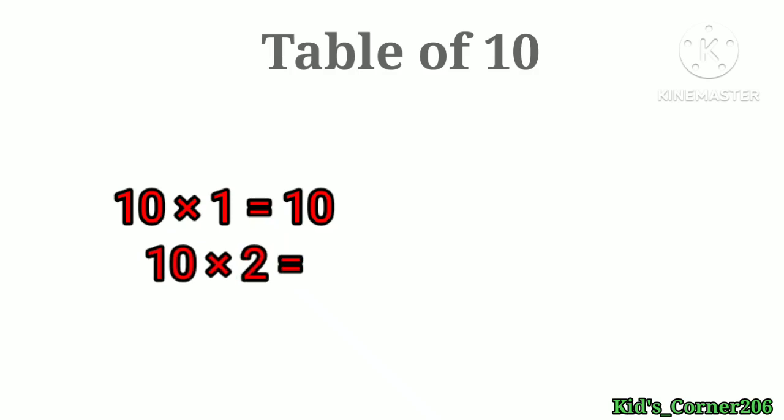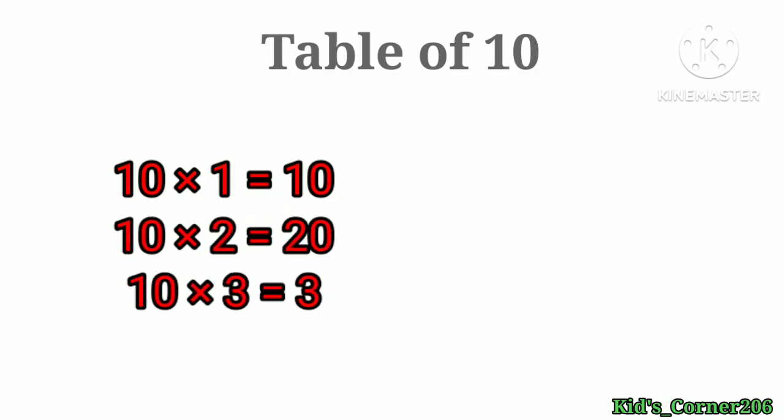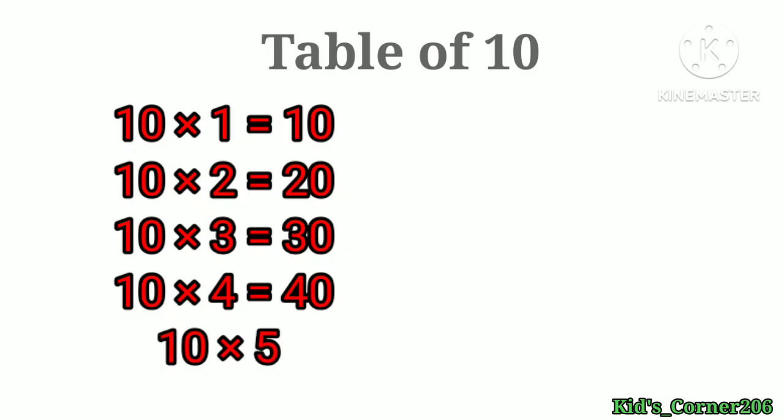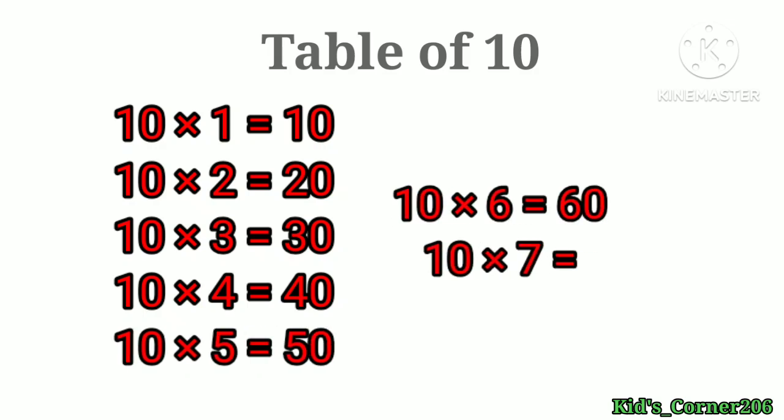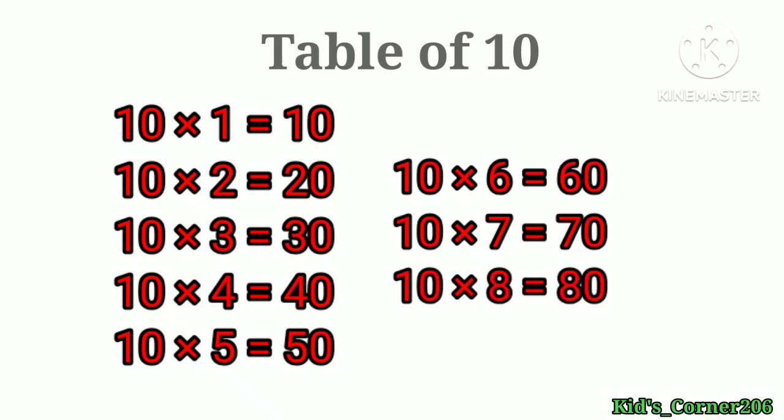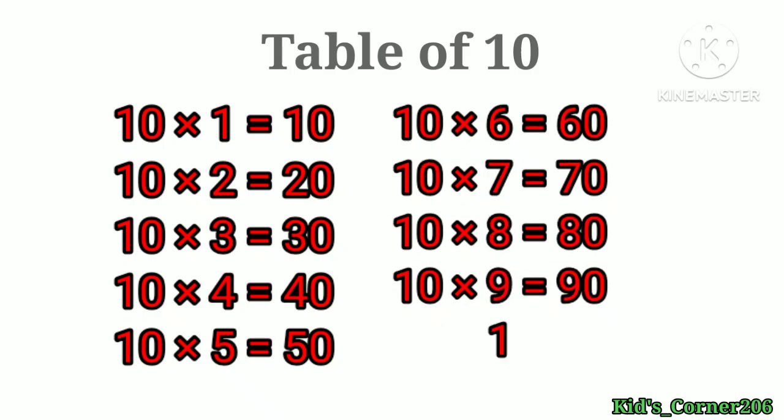Table of 10: 10×1=10, 10×2=20, 10×3=30, 10×4=40, 10×5=50, 10×6=60, 10×7=70, 10×8=80, 10×9=90, 10×10=100.